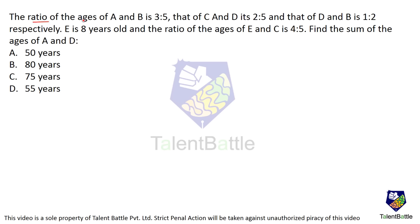Question 1: The ratio of ages of A and B is 3:5, and that of C and D is 2:5, and that of D and B is 1:2. E is 8 years old and the ratio of ages of E and C is 4:5. Find the sum of ages of A and D. Actually, a very easy question.